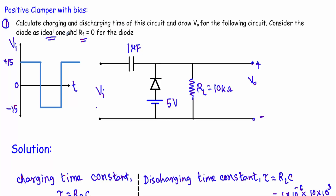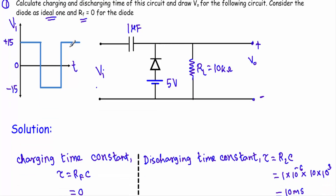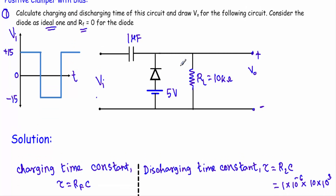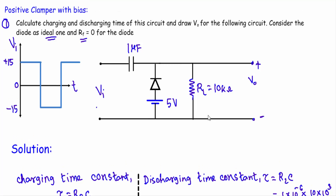Another thing to consider: the diode is ideal, meaning when the diode is in forward bias I will replace it with a short circuit, and when the diode is reverse biased I will replace it with an open circuit. This positive clamper circuit contains a capacitor of one microfarad, a diode, a load resistor of 10 kilohms, and an additional bias voltage of 5 volts with positive terminal upward. I am applying a square voltage with positive peak +15V and negative peak −15V.